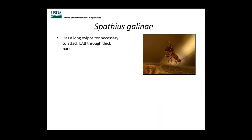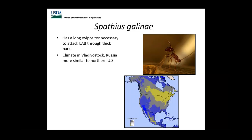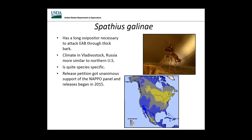The newest member of the team is Spathius galinae. It has a long ovipositor that enables it to attack EAB through thick bark, a characteristic it shares with Spathius agrili. It comes from an area in Russia with a climate more similar to our northern U.S. states. It is very species-specific, received unanimous support, and releases started in 2015. We made some releases for research purposes this past year and expect to be in full production of it in 2017.